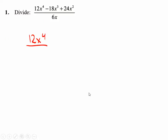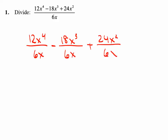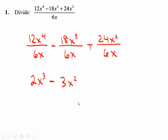We're going to put the 6x underneath each of the terms and then reduce them individually. So 6 goes into 12 twice. x to the 4th on top, 1x on the bottom — reducing gives you x cubed. Minus sign. 6 goes into 18 three times, and 3 subtract 1 makes 2, so x squared. Plus sign. 6 goes into 24 four times, and x squared subtract x to the 1 gives you just an x.